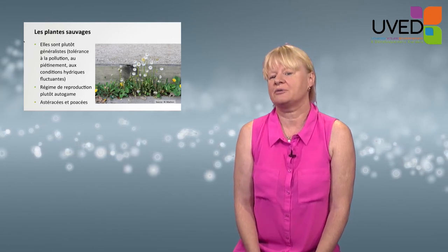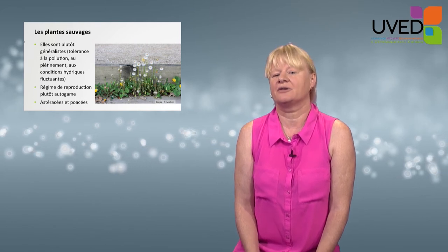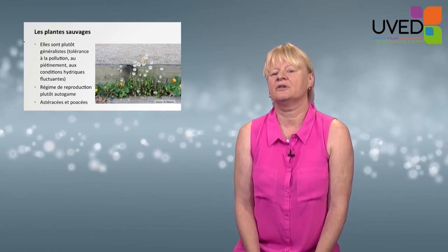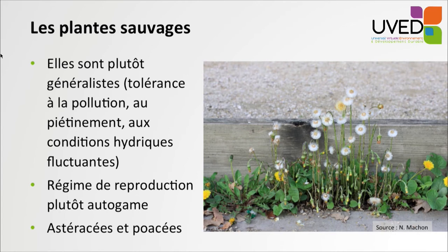Regarding plants, there are wild plants that are rather generalistic — they can tolerate pollution, being trodden and trampled. They can benefit from watering when available, but can also survive in drought. They are usually autogamous, meaning they can reproduce alone, and are typically Asteraceae and Poaceae in type, with biological characteristics suited to life in town.